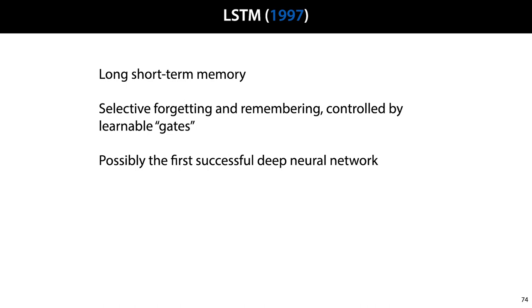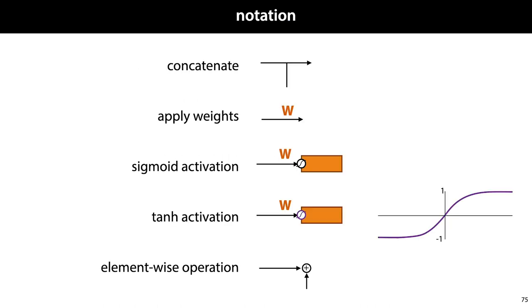To do so, first, we'll extend our visual notation. As before, two lines joining represent the concatenation of the vectors on those lines. A capital letter next to a line represents the application of a weight matrix. We'll draw a sigmoid activation like this. And we'll also use tanh activations, which are like sigmoid activations, but instead of squeezing their domain into the range between 0 and 1, they squeeze their domain into the range between minus 1 and 1. And finally, for element-wise operations like summing or multiplying two vectors, we'll use this notation.